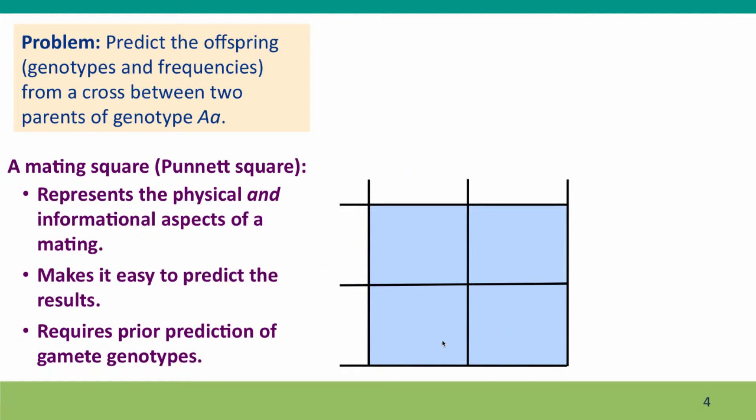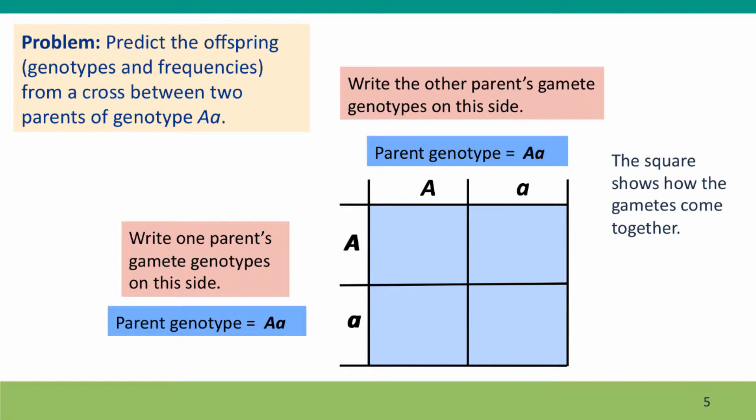So what are the gamete genotypes for this cross? So this is a very simple cross, and it's easy to predict the gamete types. The parents are both genotype big A, little a. They can only produce two kinds of gametes, big A gametes and little a gametes, and they're each going to represent half of the total gametes. So we can write the gamete types into the sides of the square. One parent's gamete genotypes on the side, the other parent's gamete genotypes on the top. In this case, they're identical, but they certainly don't need to be. And then the gametes can come together.